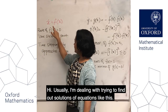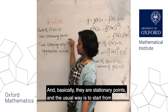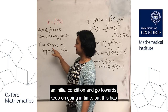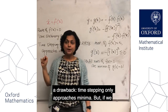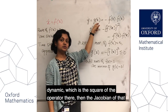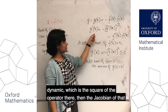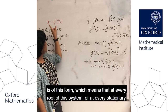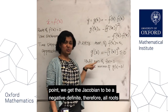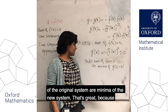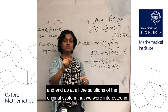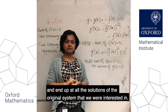Usually I'm dealing with trying to find solutions of equations like this — basically stationary points. The usual way is to start from an initial condition and evolve in time, but this has a drawback: time-stepping only approaches minima. But if we consider a related yet different system where we define a new dynamic — the square of the operator — then the Jacobian is of a form such that at every root of the original system, the Jacobian is negative definite. Therefore, all roots of the original system are minima of the new system, so we can start from an initial condition and end up at all the solutions we were interested in.